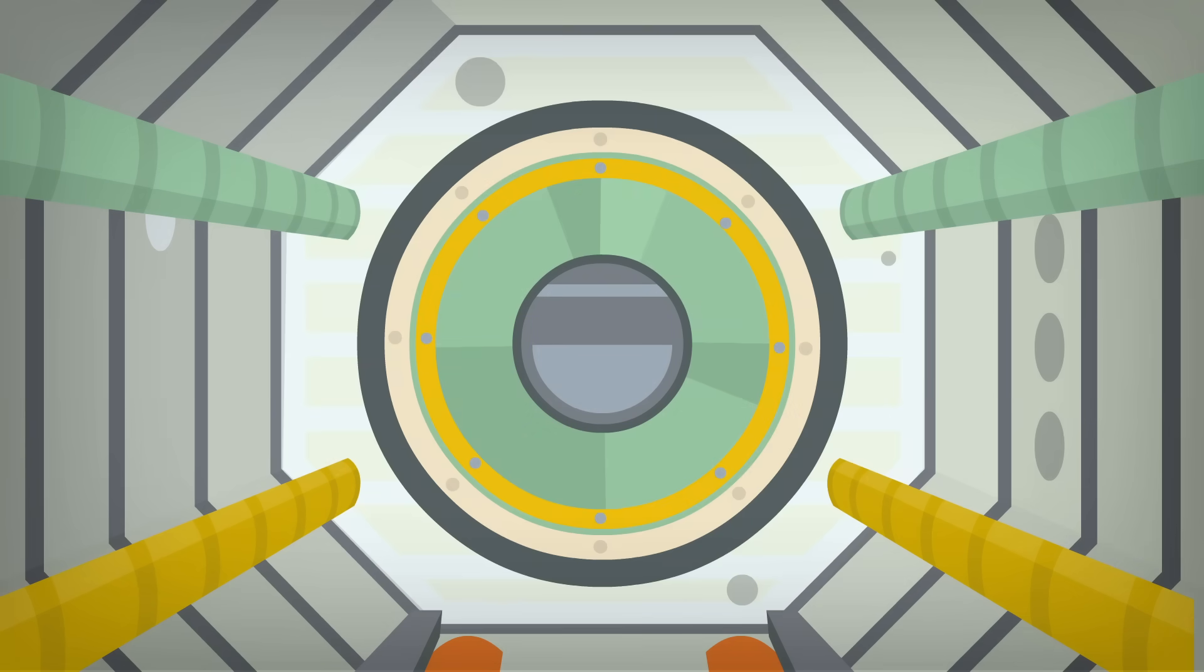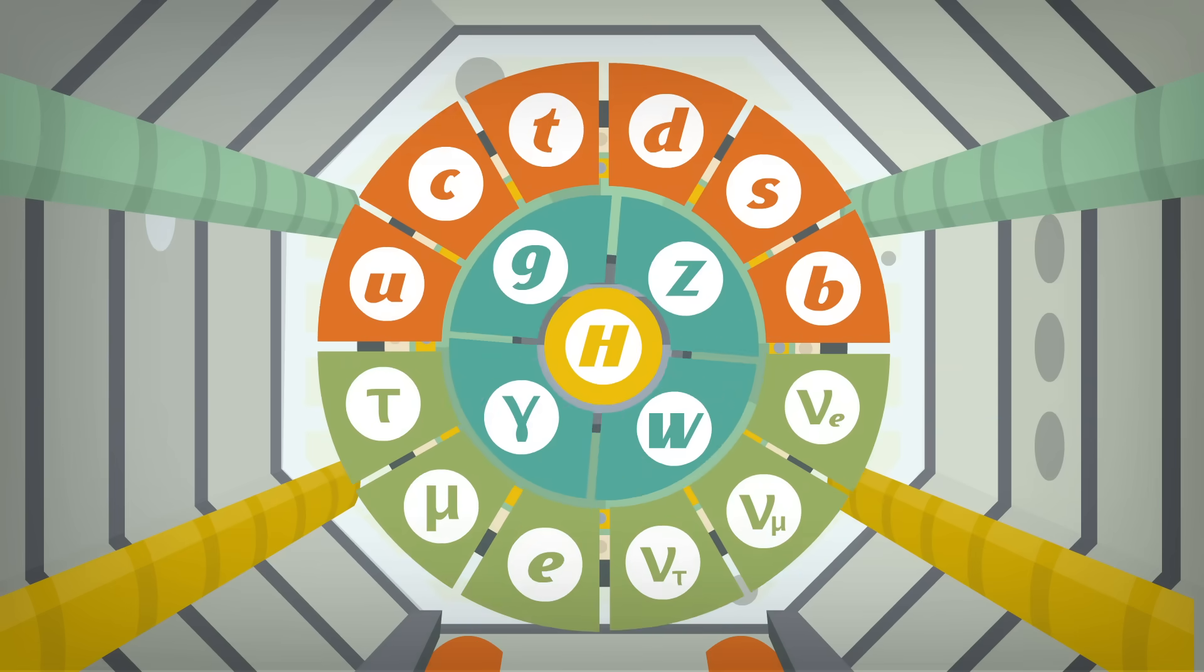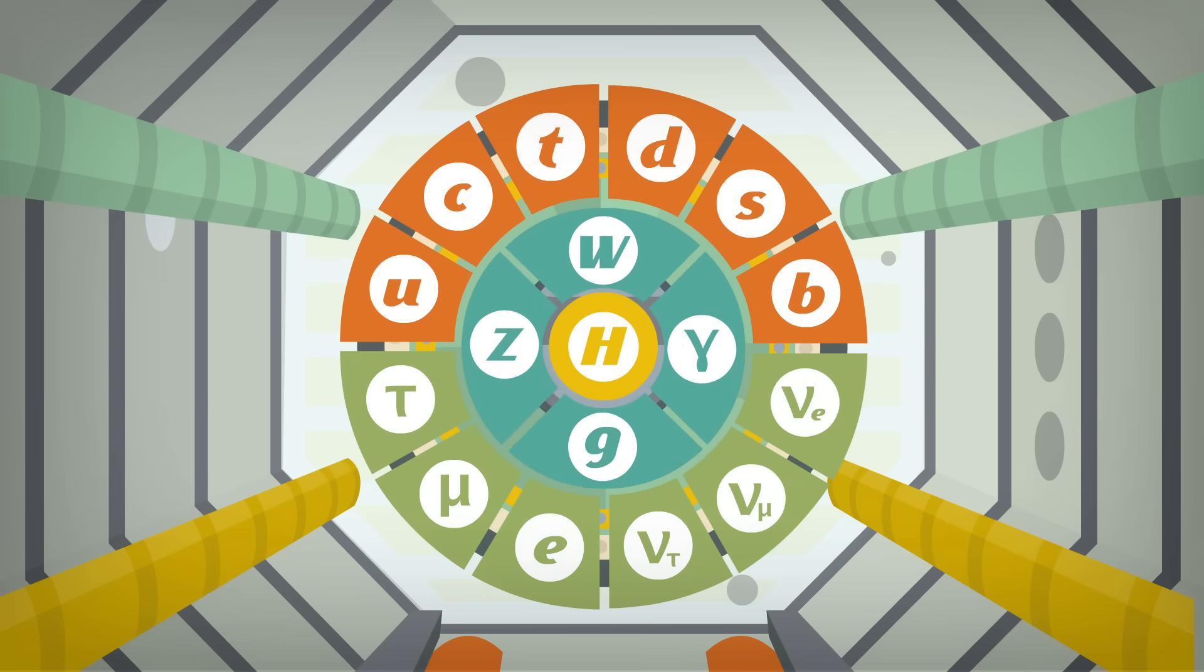The final particle of the standard model is the Higgs boson, a quantum ripple in the background energy field of the universe. Interacting with this field is how all the fundamental matter particles acquire mass, according to the standard model.